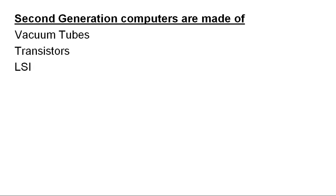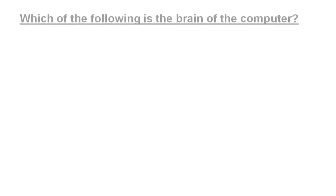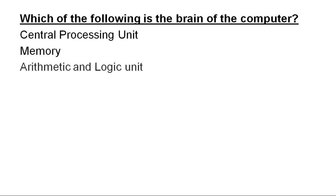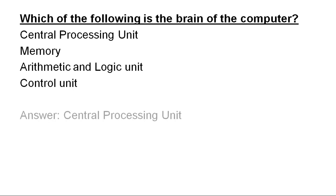Which of the following is the brain of the computer? Options: Central Processing Unit (CPU), memory, Arithmetic and Logic Unit (ALU), or Control Unit (CU). The brain of the computer is known as the Central Processing Unit (CPU).